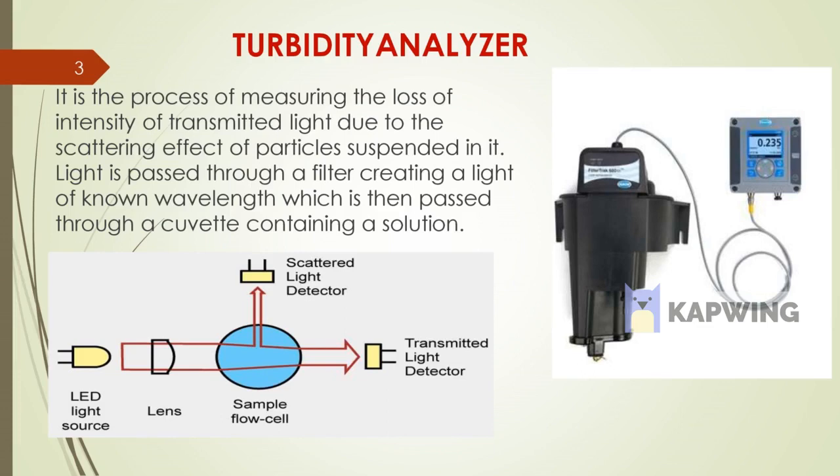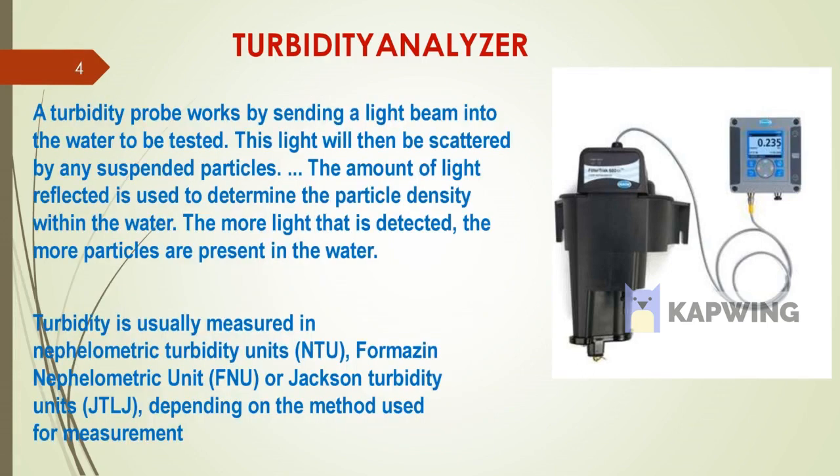A turbidity probe works by sending a light beam into the water to be tested. This light beam is scattered by the suspended particles. The amount of light reflected is used to determine the particle density within the water — the more light detected, the more particles present, giving us the turbidity reading.